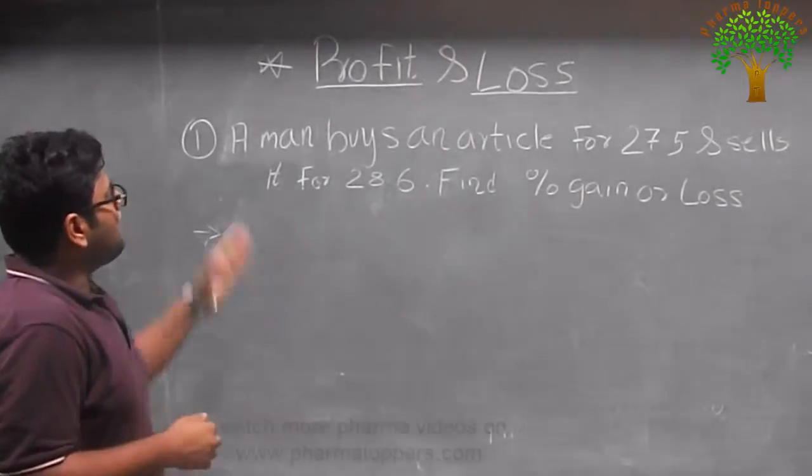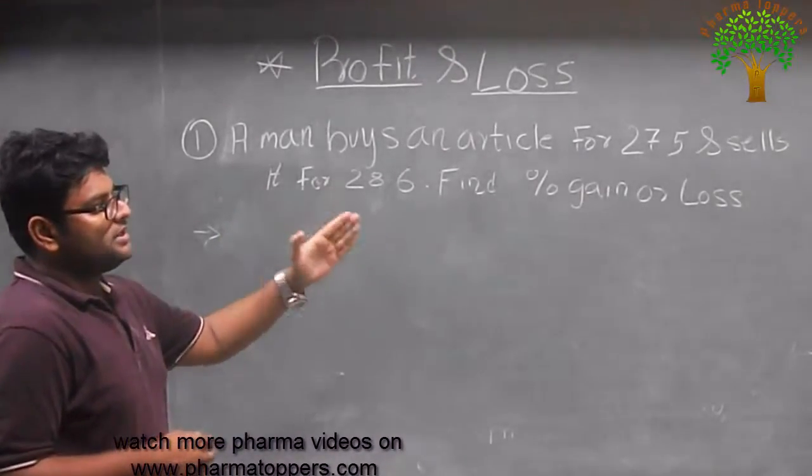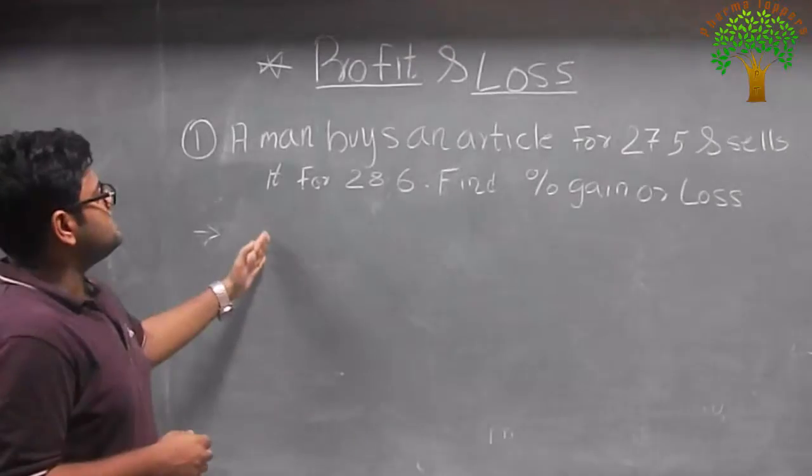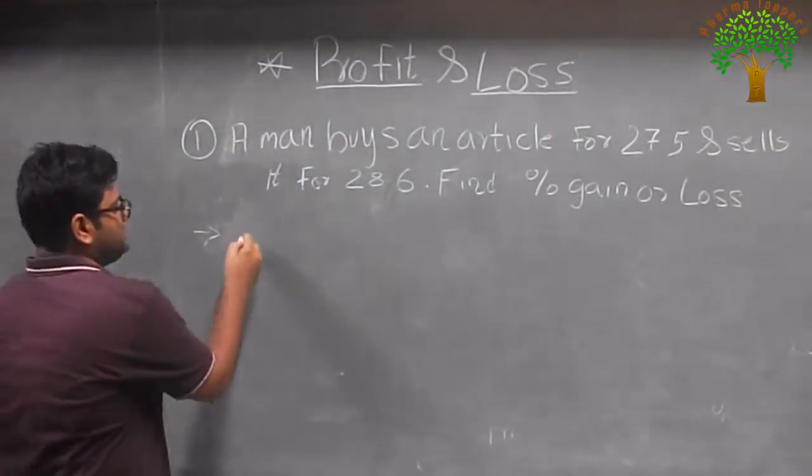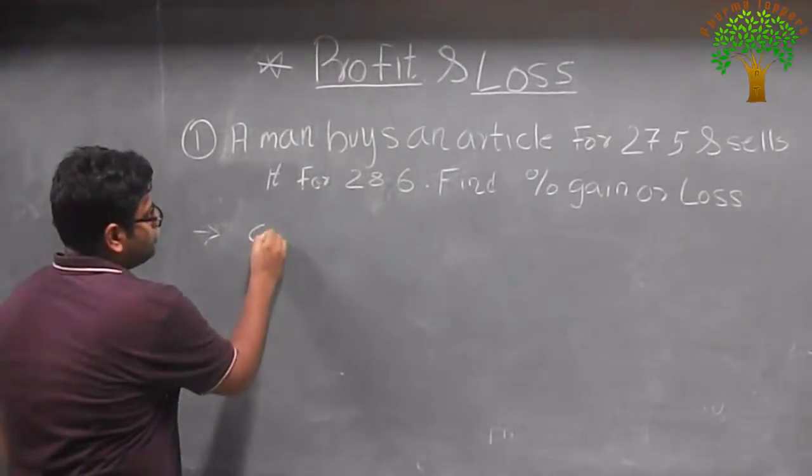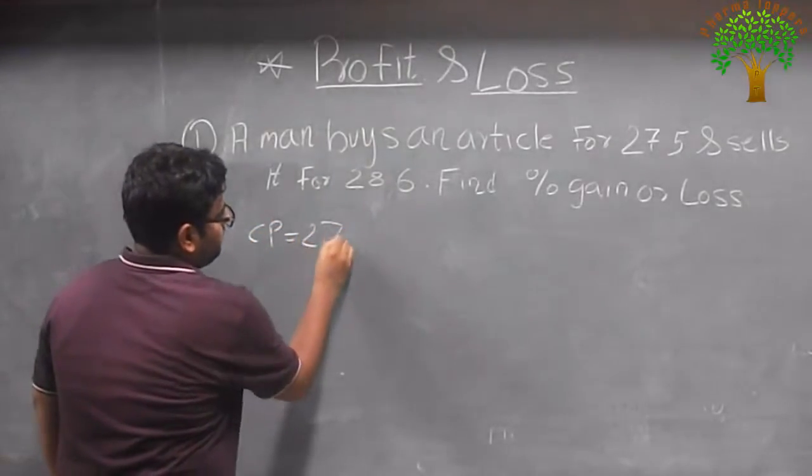Now what we have been given. A man buys an article for 27.5p and sells it for 28.6p. Find the percent gain or loss. So now let's see what data we have. First of all we have the cost price that is 27.5p.